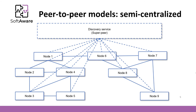In computational peer-to-peer systems, where a process or intensive computation is distributed across a large number of nodes, it is normal for some nodes to be superpeers.